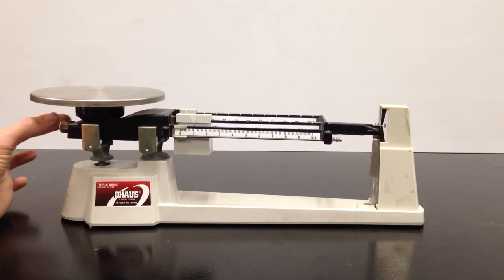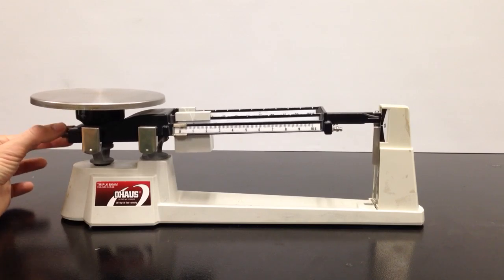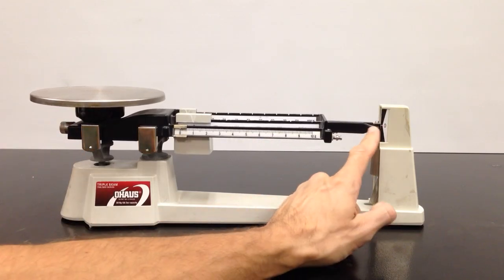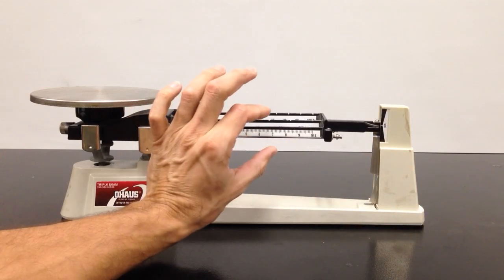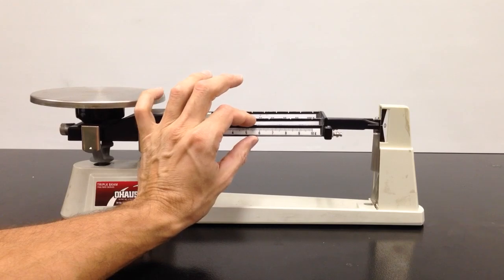This little guy right here is an adjustment knob. Right here is a pointer, and then this is your scale or your zero. When you start out, you want to make sure that your balance is right at zero.